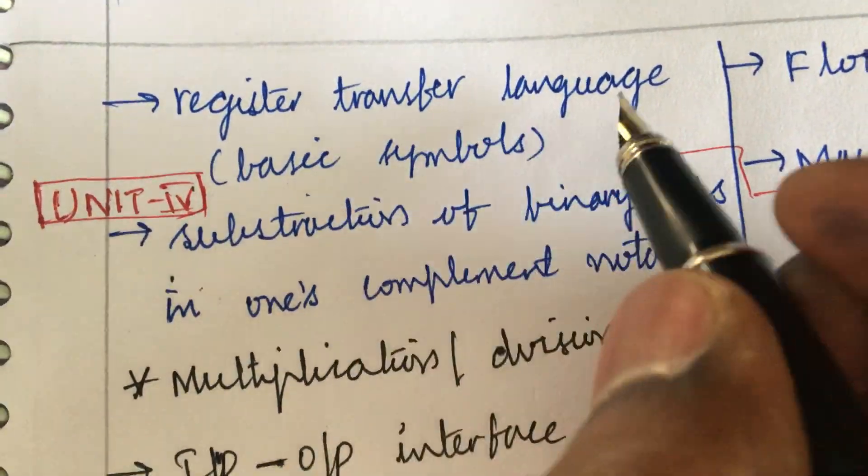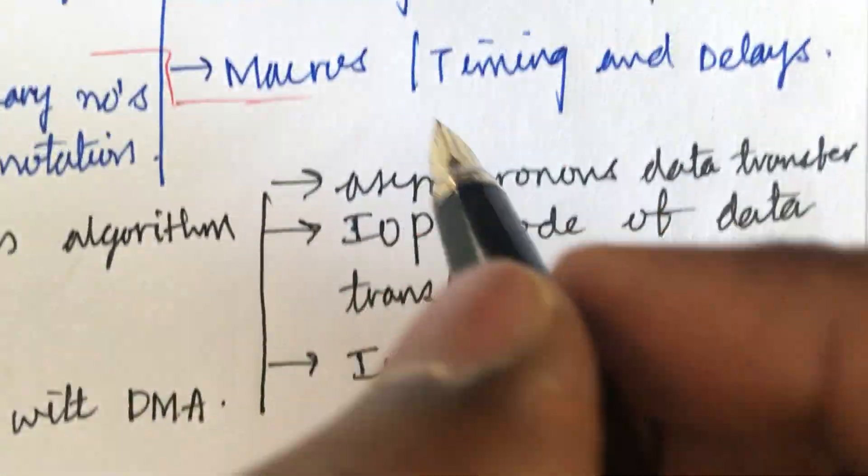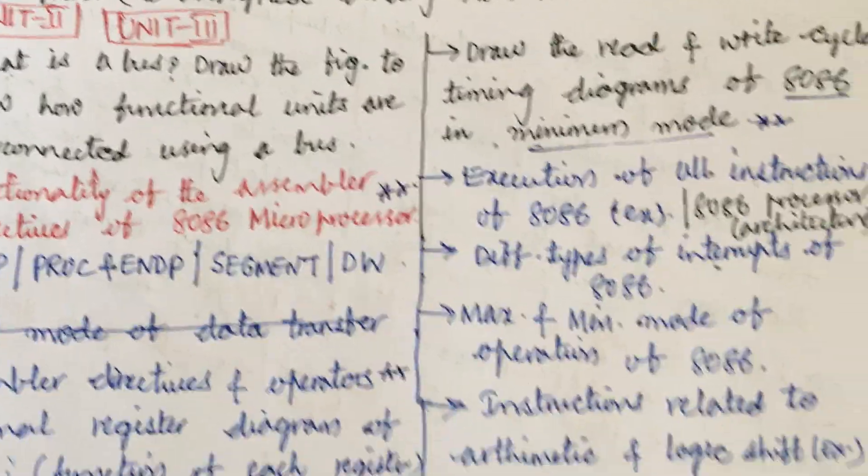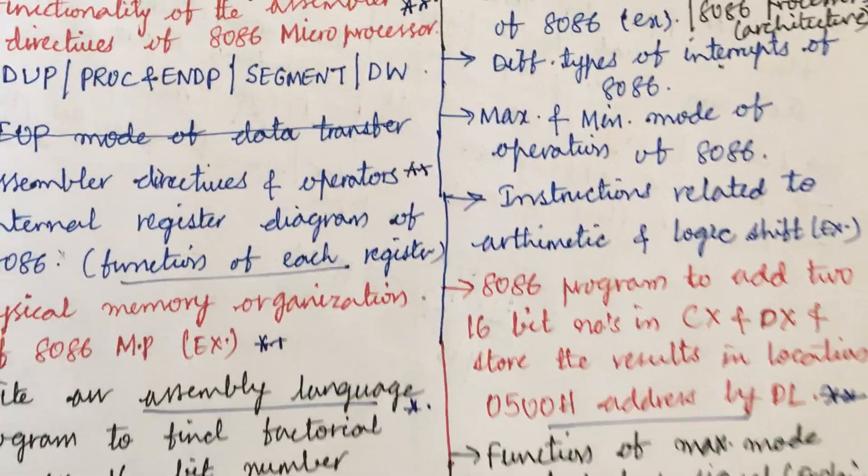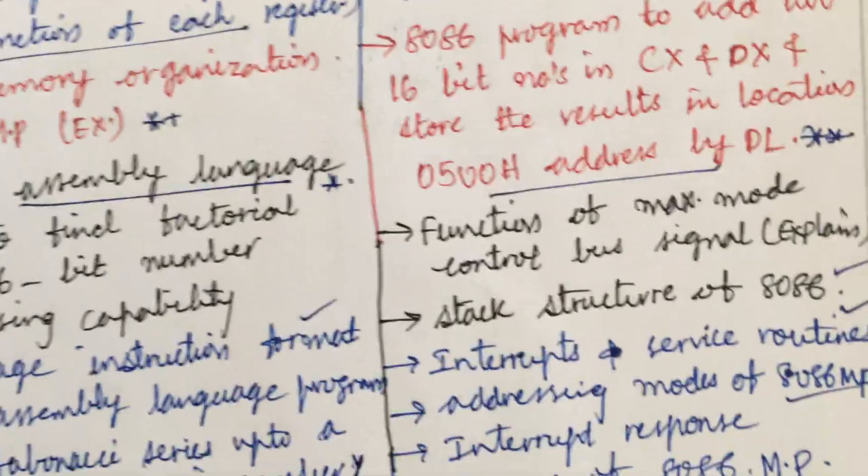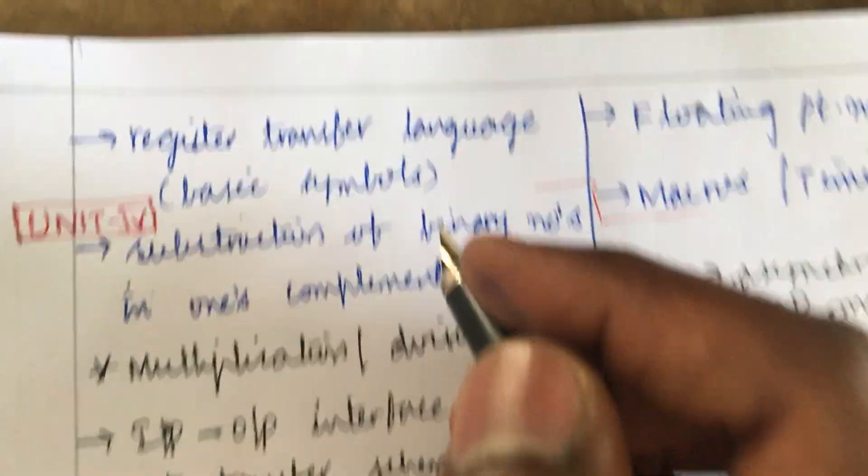Later I have come up with register transfer language and the basic symbols and the macros and the timing and delay. These are said to be the short and the long questions for the Unit 2 and 3. Do prepare well for the course microprocessor, I mean COM, to score out of outmark.